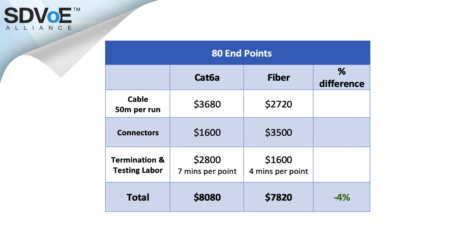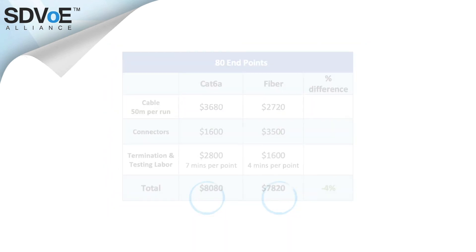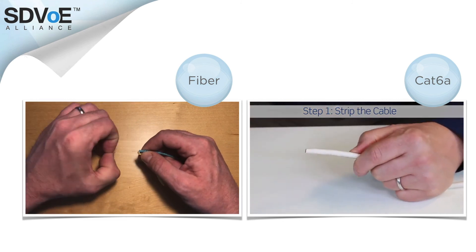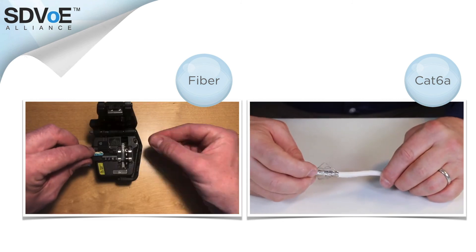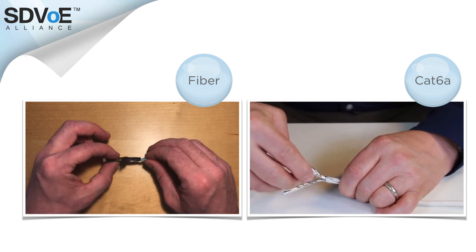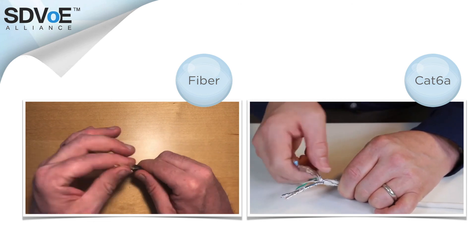Fiber optic cable was always considered expensive, and yet if we do a cost comparison today, we can see that fiber is already significantly cheaper than its copper counterpart. And because fiber doesn't require any shielding, it makes it much easier to handle and far quicker to terminate than its shielded copper equivalent.